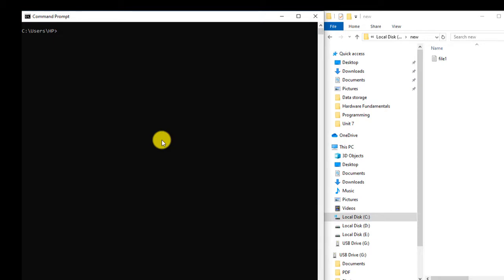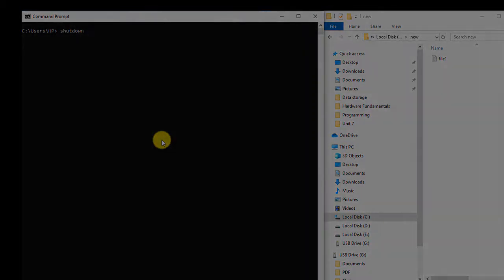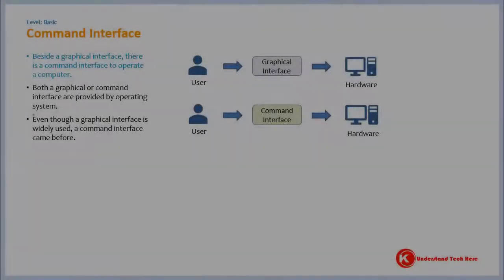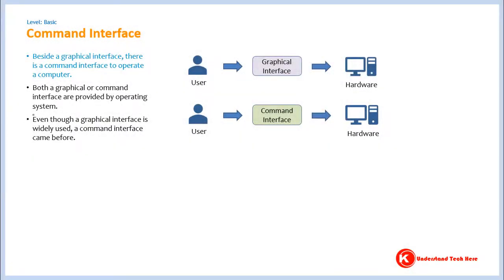Similarly, if you want to shut down the computer, you can type the command 'shutdown'. So you get the sense — whatever you can do in a graphical interface, you can also do in a command interface. Again, who provides this capability? It is the operating system. So the operating system provides both a graphical and a command interface to operate and do things in a computer.